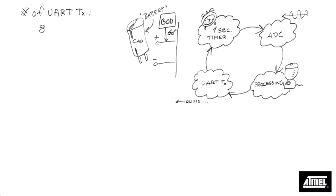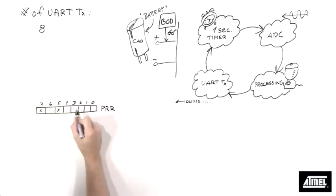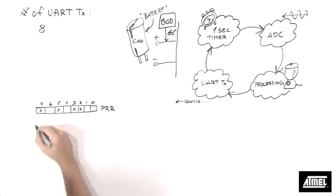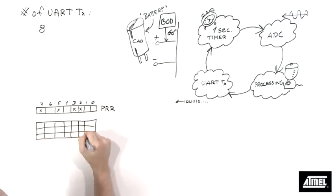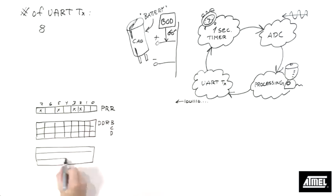Let's apply some power saving techniques. Using the power reduction register, we switch off everything we don't use. Timers, analog modules and all serial communication except the one UART.